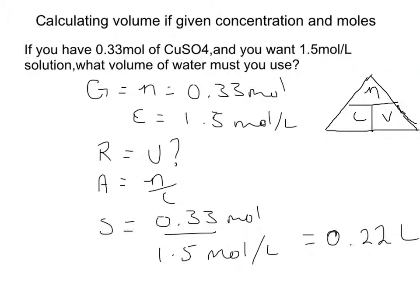So you want to find volume. You're going to take the 0.33 and divide it by 1.5 mol per liter, and you're going to get an answer of 0.22 liters of water.